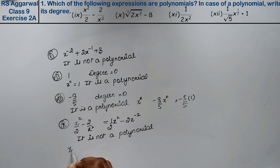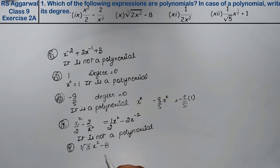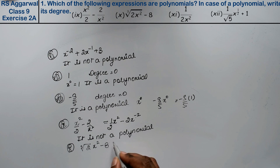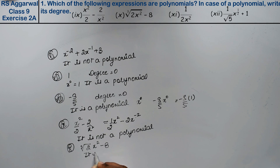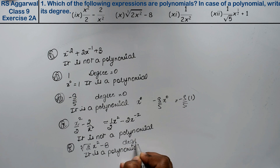Tenth part is cube root of (2x² minus 8). It is a polynomial, and the degree is 2.